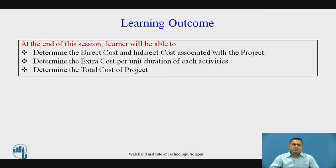At the end of the session, the learner will be able to determine the direct costs associated with particular activities as well as the indirect costs associated with particular activities, which will help to define the overall direct costs and indirect costs associated with the project. The learner will also be able to determine the extra costs associated with a particular activity if it is going to be compressed, and finally determine the total project cost.